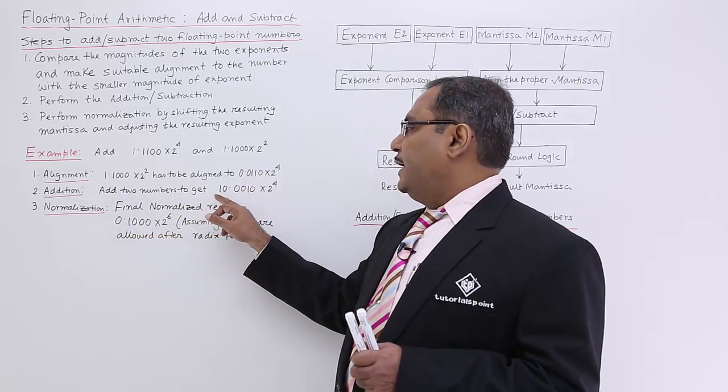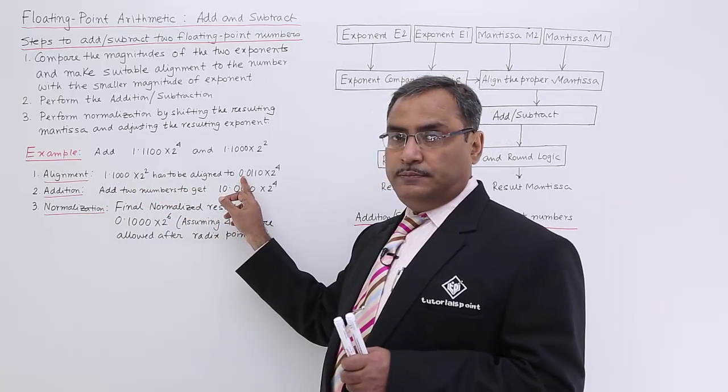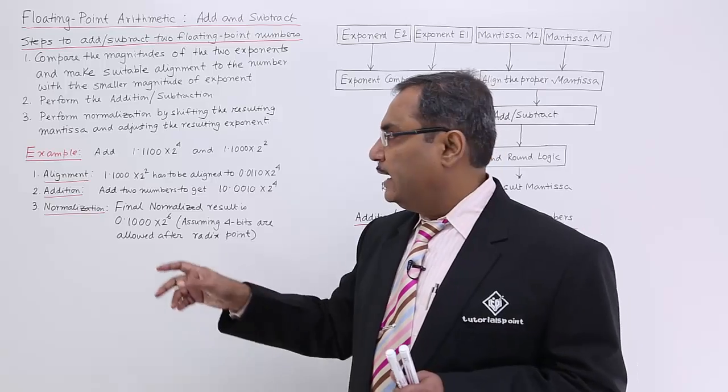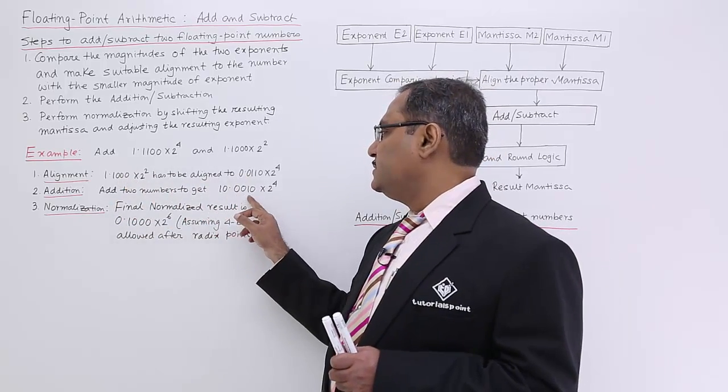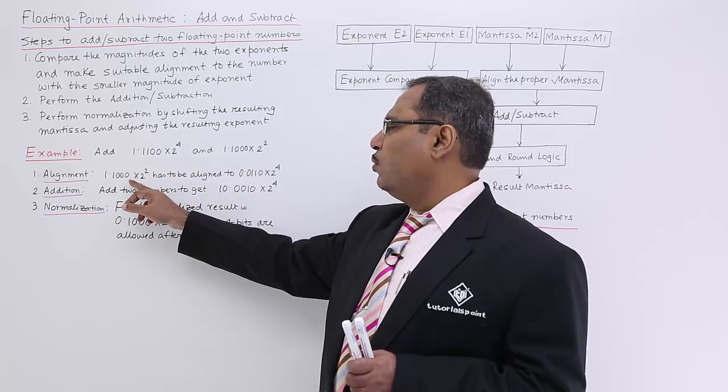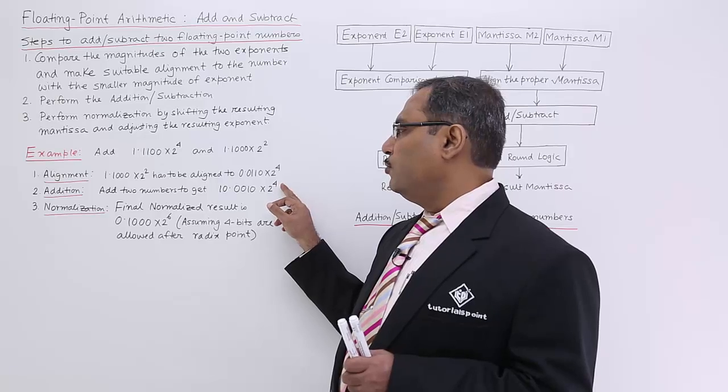Add two numbers to get... now just go on adding these two mantissa parts. Mantissa can also be called as significant. Please add these two mantissa parts and this is the answer you are getting. You can go on adding and you will be getting this one very simple.